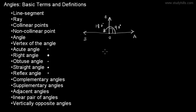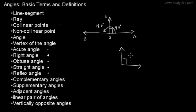Any angle which is less than 90 degrees and greater than 0 degrees is called an acute angle. All angles inside this area are acute angles. For example, a 45-degree angle is an acute angle.